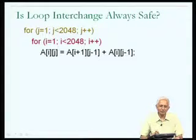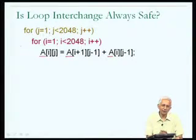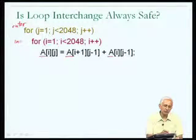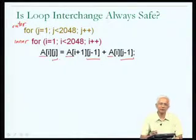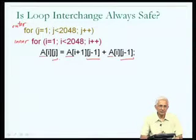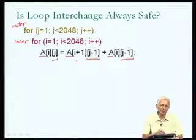In this example, I am dealing with only one two-dimensional matrix A, but doing a more complicated operation on it. The outer loop uses index J, and J is used as the second subscript of matrix A in all three places it is referenced inside the loop. Each time through the loop, we add some element of A to another element of A, making this the new value of a third element of A.